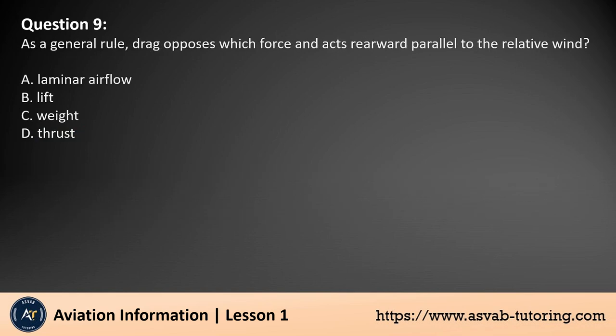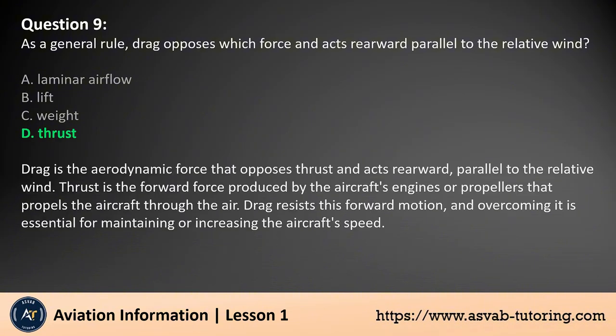Question 9. As a general rule, drag opposes which force and acts rearward parallel to the relative wind? A. Laminar airflow. B. Lift. C. Weight. D. Thrust. The answer is D. Drag is the aerodynamic force that opposes thrust and acts rearward, parallel to the relative wind. Thrust is the forward force produced by the aircraft's engines or propellers that propels the aircraft through the air. Drag resists this forward motion, and overcoming it is essential for maintaining or increasing the aircraft's speed.